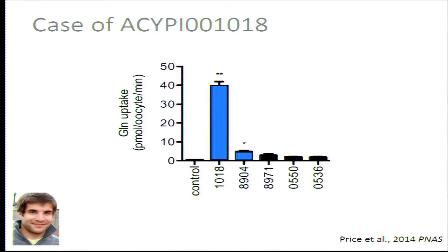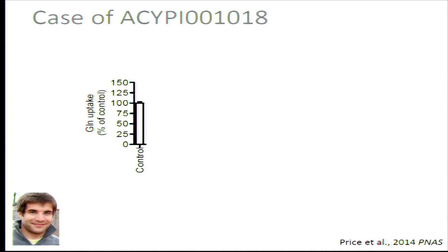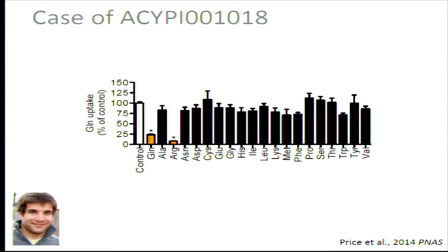The most interesting result is a competition experiment. We competed transport of 1 mM radiolabeled glutamine against 10 mM concentrations of all other proteinogenic amino acids. At 100% baseline transport, competition with 10 mM unlabeled glutamine reduces transport by 75%. The only other amino acid that reduces glutamine transport — and actually does a better job than glutamine itself — is arginine, producing about 90% reduction.